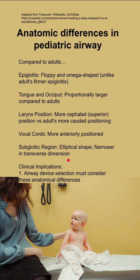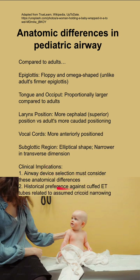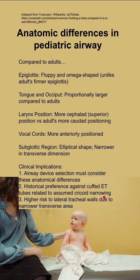There are some clinical implications to these changes. Airway device selection must consider these anatomical differences. In kids, there is a historic preference against cuffed endotracheal tubes — uncuffed tubes are used because clinicians assume cricoid narrowing below the cords means a cuff is less necessary than in adults.